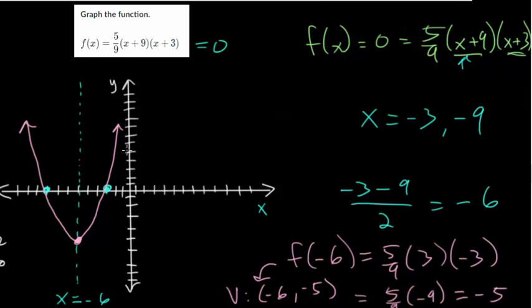But to find the y-intercept, that's just remember when x is zero. So you plug that into your function here, you get 9 times 3, which is 27 divided by 9, which is 3, and then 5 times 3, which is 15. So maybe somewhere up there.